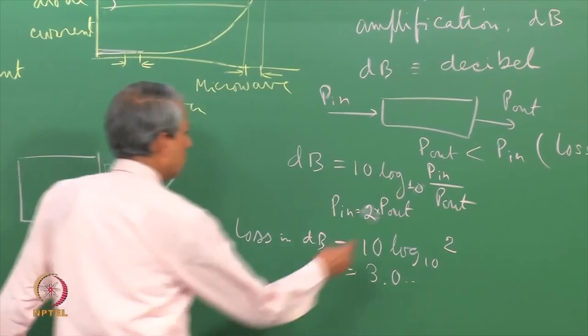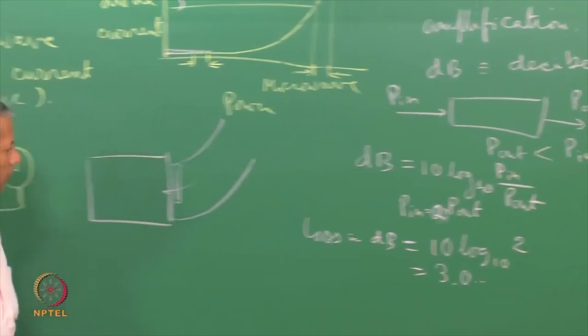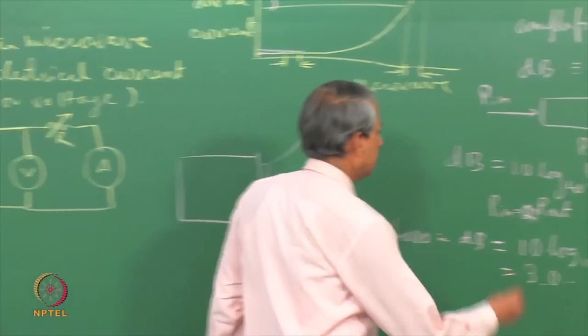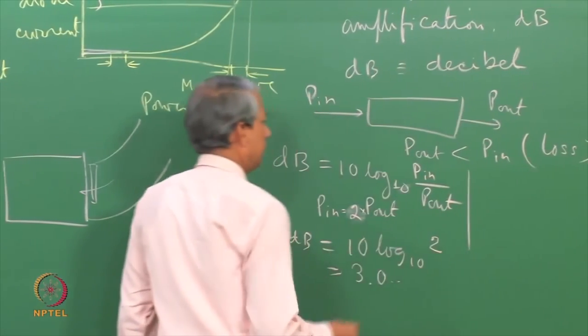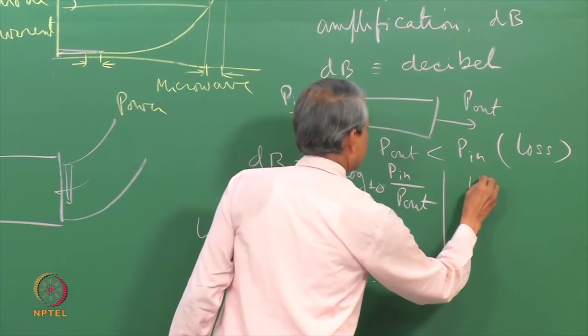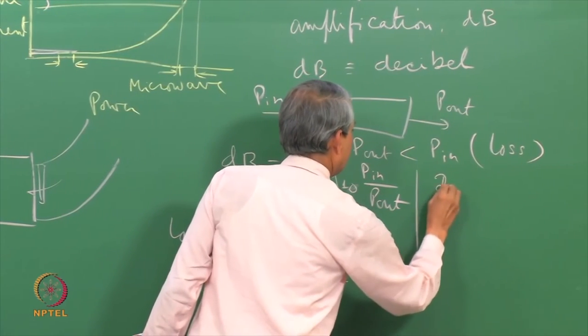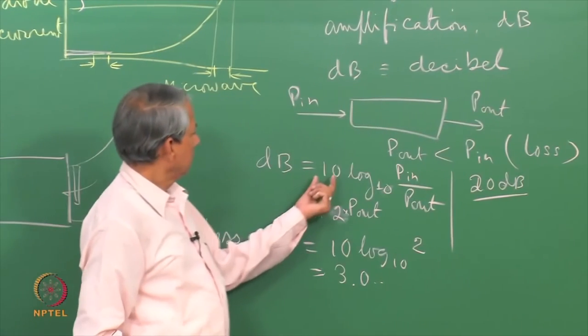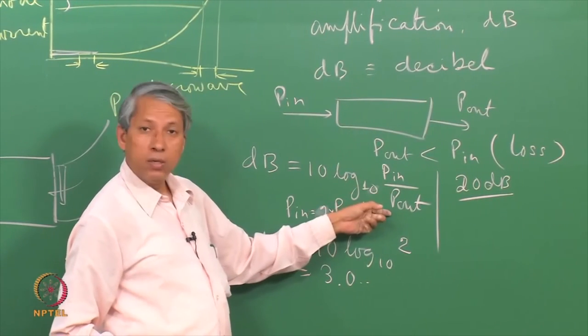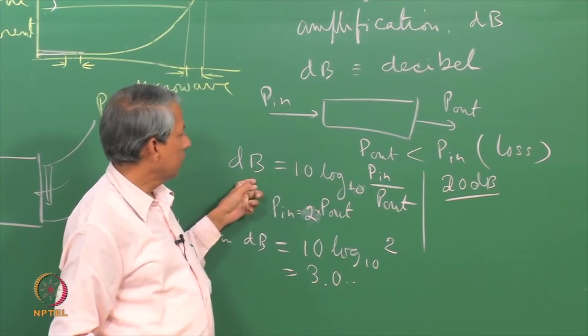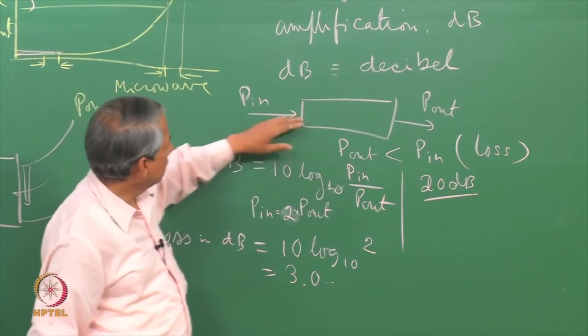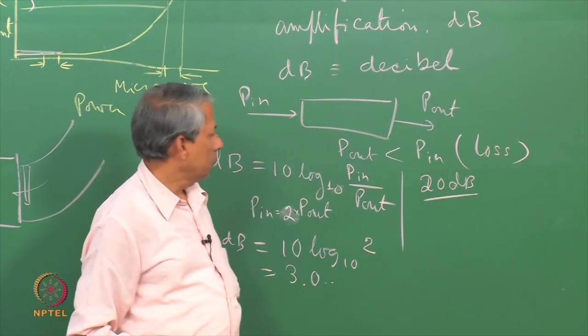This is a logarithmic scale. If P out is half the power that is coming out, then if you put it here, the loss in dB will be 10 log base 10 of 2. If you do this log 2, then 10, this will be about 3.0 something. This will be about 3 dB loss when half the microwave power goes in. Because of the logarithmic nature and also the base 10, it's very easy to mentally come out with some quick number. Suppose the loss is 20 dB, then this ratio must be 100. 20 dB here means this ratio will be 100. One hundredth of power is coming here, this is 20 dB.